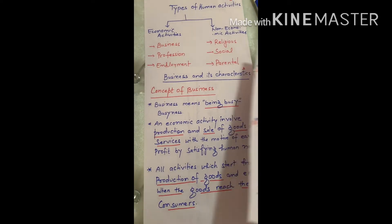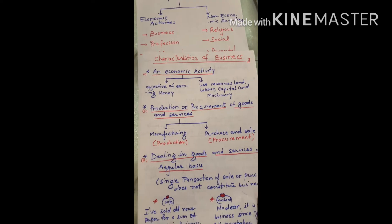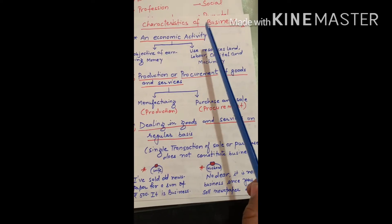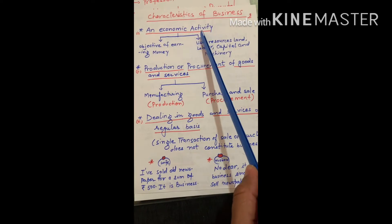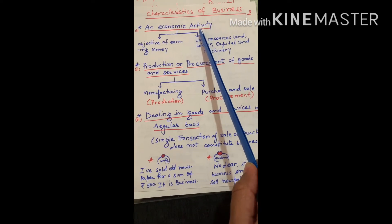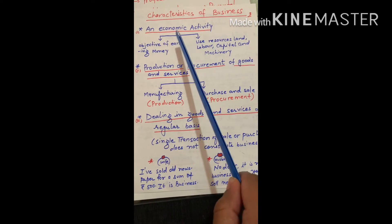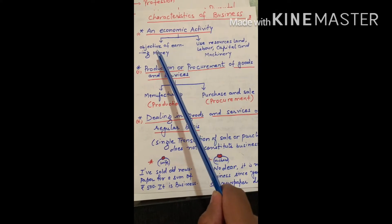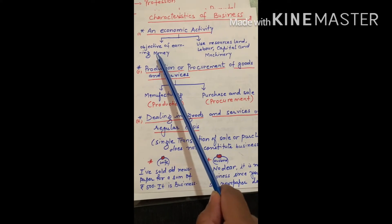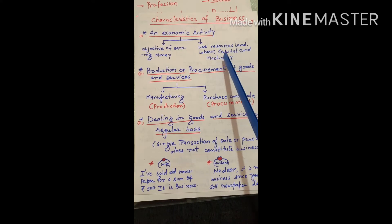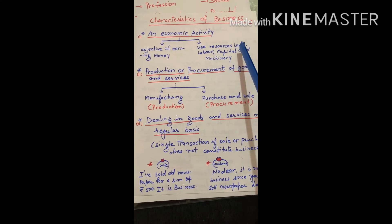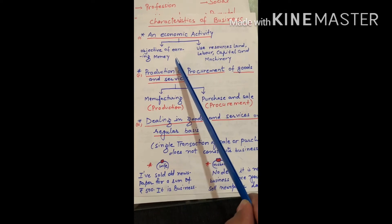Now we will discuss about characteristics of business. There are seven characteristics of business. First is an economic activity. Business is an economic activity because main objective is to earn money. And how will we earn money? We will use resources: land, labor, capital and machinery. And with the help of these resources, we will earn the money.